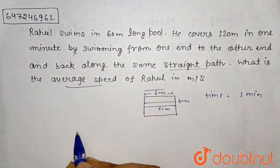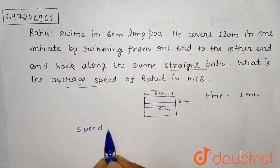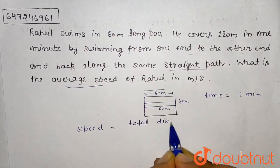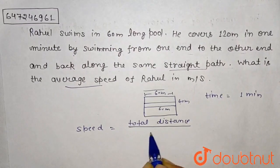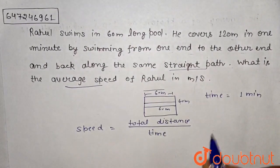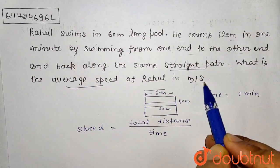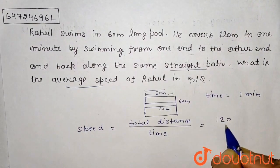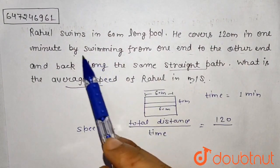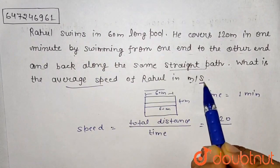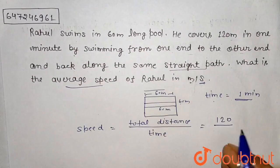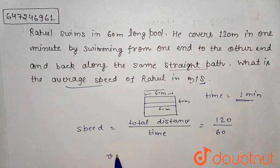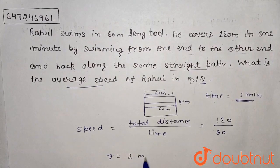We have to find average speed. Average speed equals total distance covered divided by time. The answer is in meters per second. Distance is 120 meters. Time is 1 minute, which we convert to 60 seconds. So average speed equals 120 divided by 60, which gives us 2 meters per second.